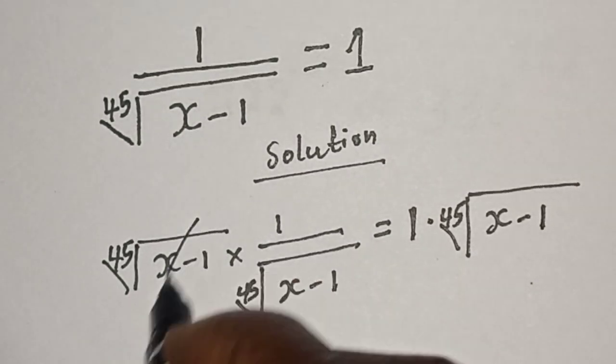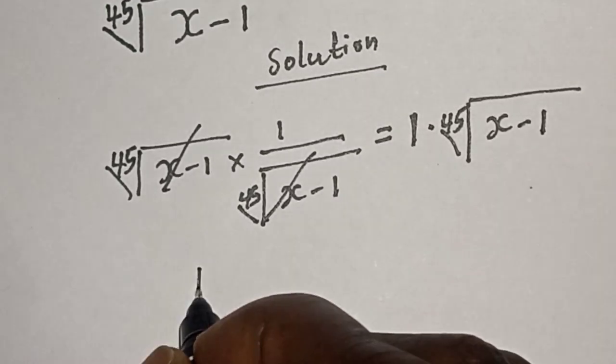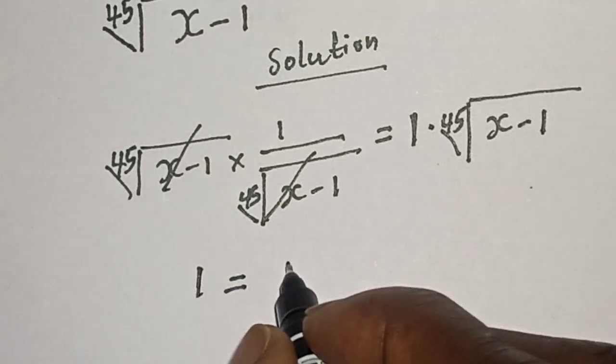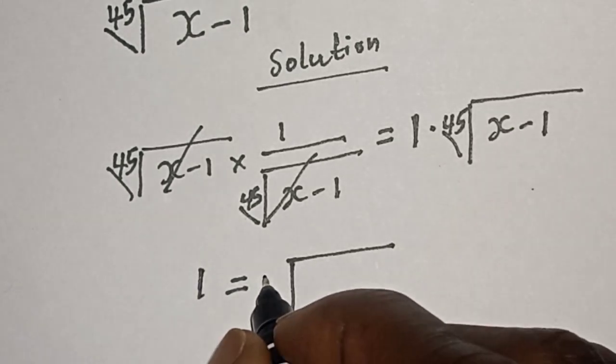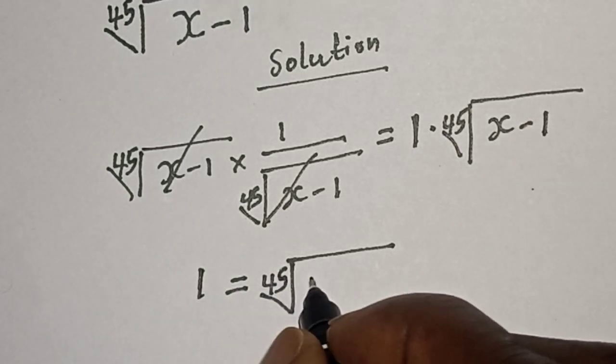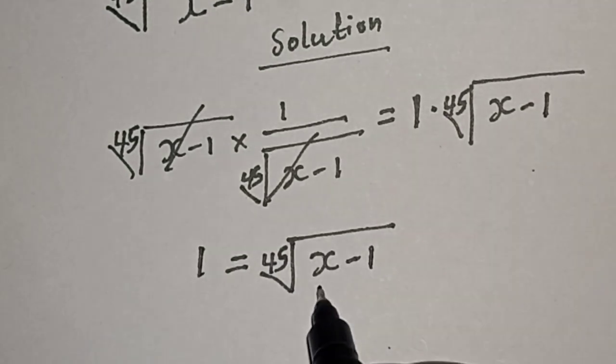So, this one will cancel this. We have 1 is equal to 45 root of x minus 1. But we are looking for the value of x.